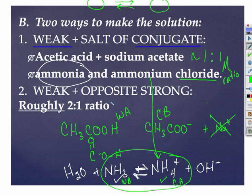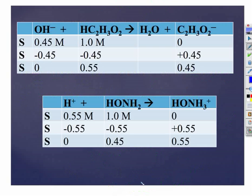Another way to do this would be to add a weak and the opposite strong. Now notice this time we're doing it in a roughly two to one ratio. I think this is getting a little tricky now. Let me show you some numbers, and I think you'll see why we want it to be in a roughly two to one ratio. Now, this is acetic acid CH3COOH. It's written in a different form. You really do need to be familiar with both ways of writing these things.